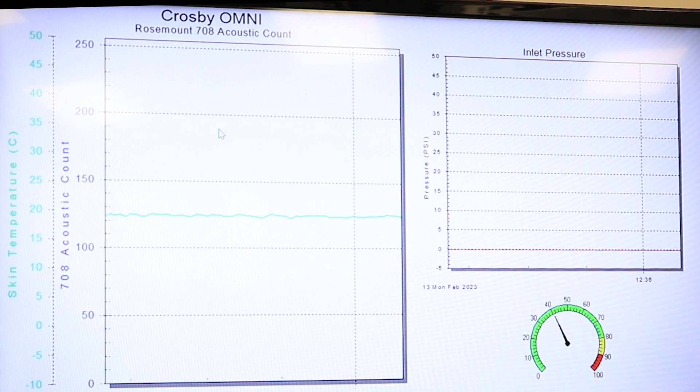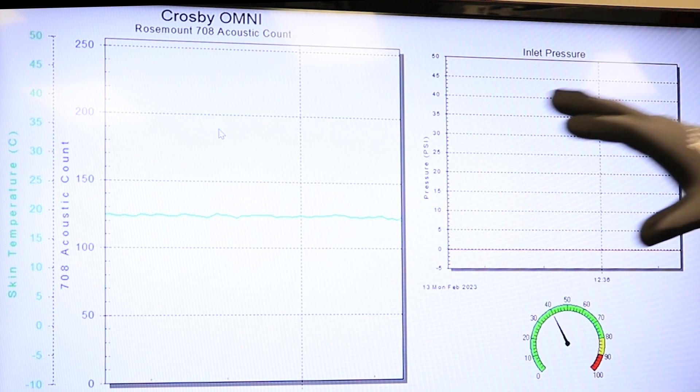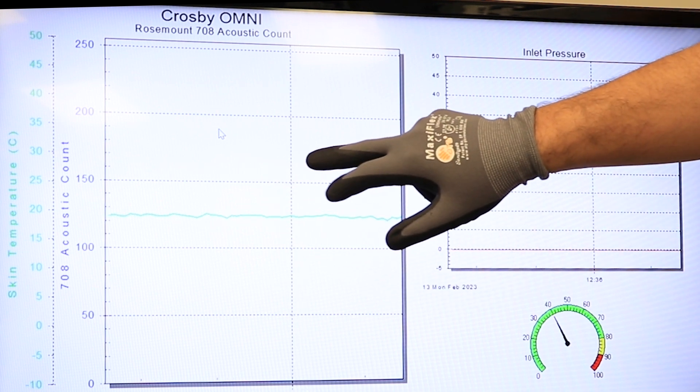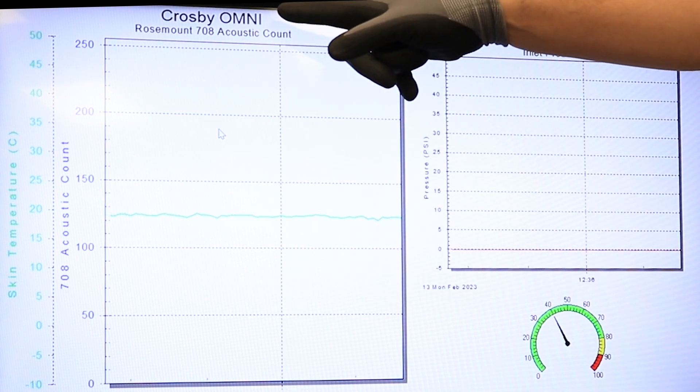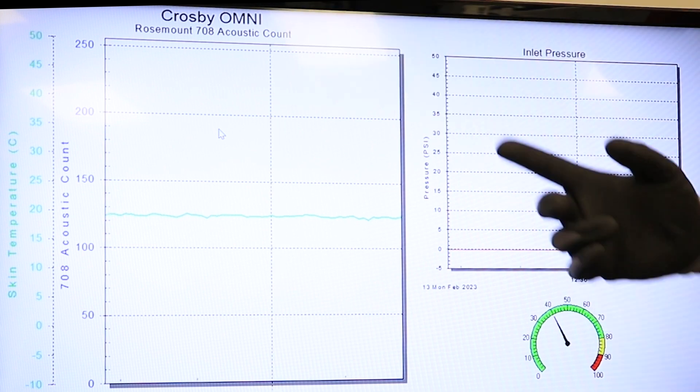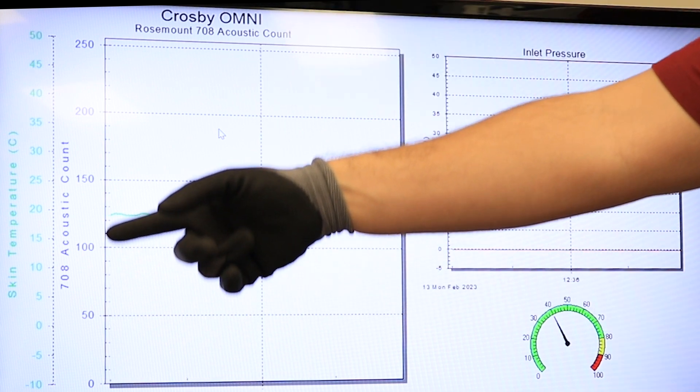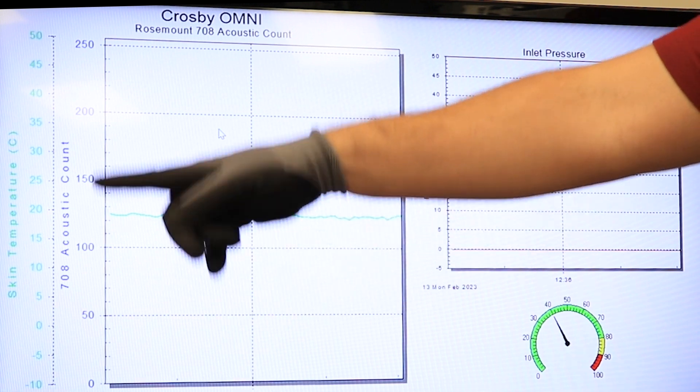In this graph, we're graphing the system pressure with a different pressure transmitter that's not part of our solution. We're also graphing the pressure at the inlet of the Omni PRV. But more importantly, we're graphing the two variables from the 708 mounted at the outlet piping of the Omni. The first one, in blue, we're graphing the acoustic counts that go from 0 to 150.